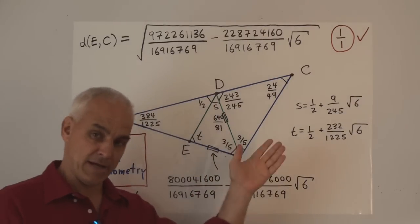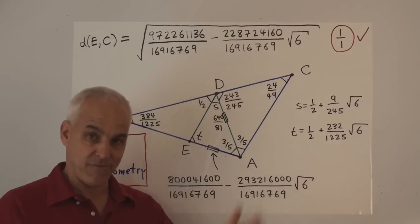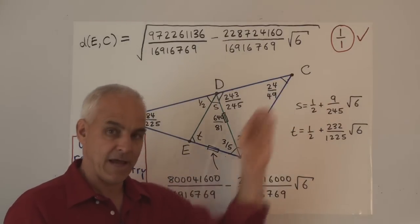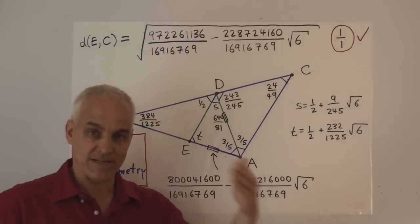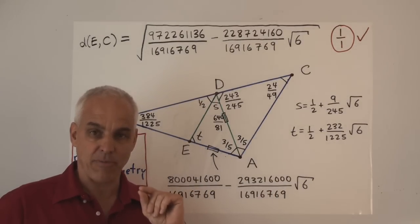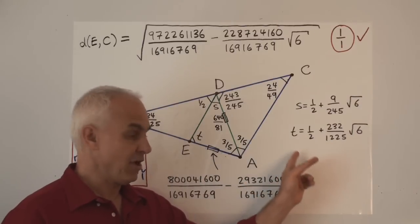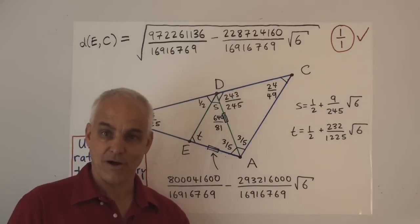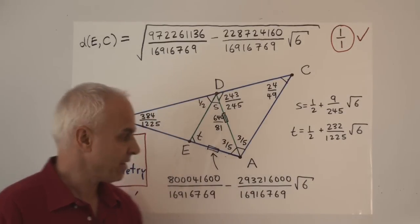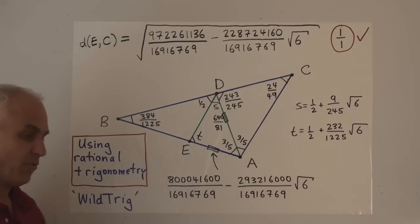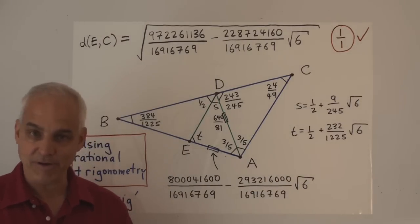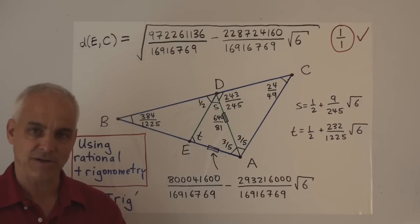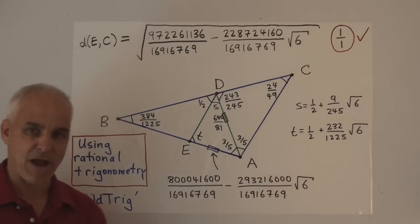So if we were dealing with a more complicated situation where this was just stage one of four, five, or ten stages, we would carry these exact answers along to generate further exact answers. We would never compromise and replace an exact expression like this with a decimal approximation, because that would lose our correctness. This is all in the framework of rational trigonometry — if you want to know more, there's an entire series of YouTube videos under 'Wild Trig' that I've posted, and I strongly suggest you learn some rational trigonometry.